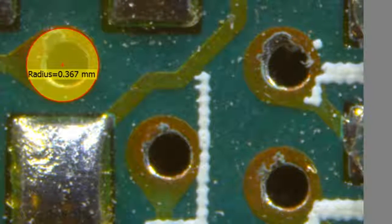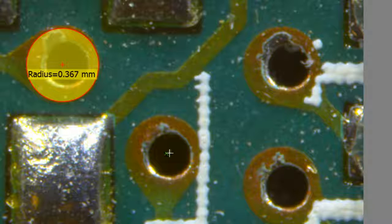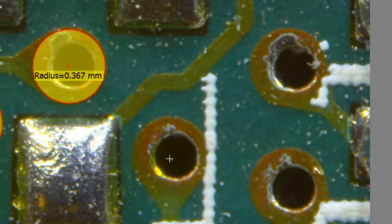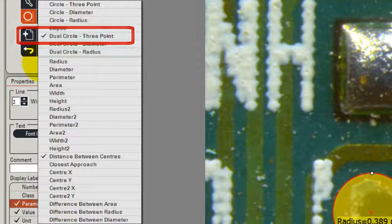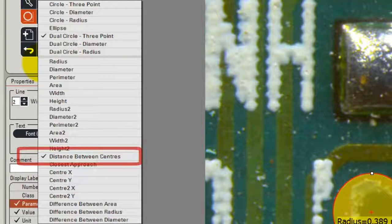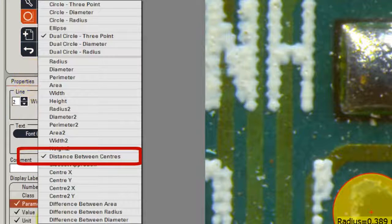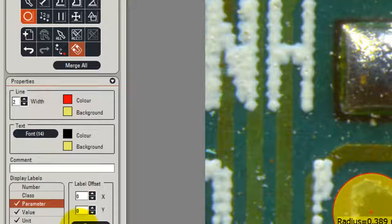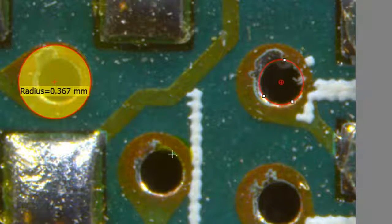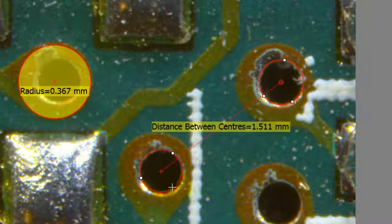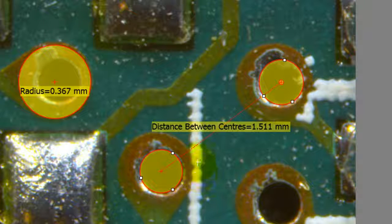A slightly different circle measurement is if I wanted to measure the distance between the center of these two fire holes. In this case I select the dual circle measurement and I select the distance between the center as the parameter that I want to show. I click on the first hole and then click on the second hole and that's the result. The distance between the centers is shown as measured on the label.